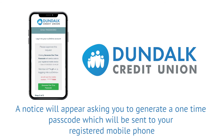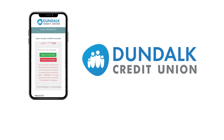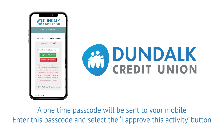A notice will appear asking you to generate a one-time passcode, which will be sent to your registered mobile phone. Approve this request by pressing the 'Generate one-time passcode' button at the bottom of the page. A one-time passcode will be sent to your mobile. Enter this passcode and select the 'I approve this activity' button.